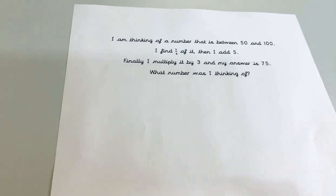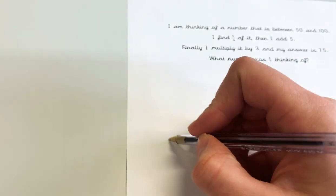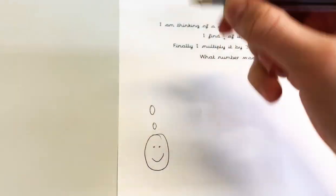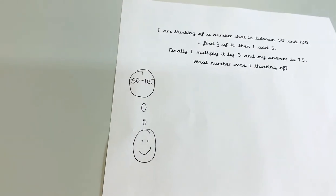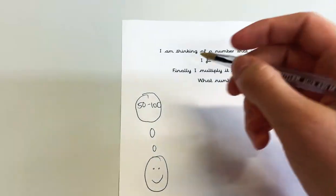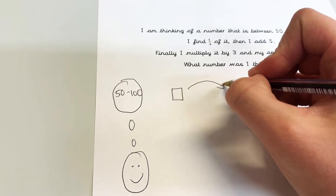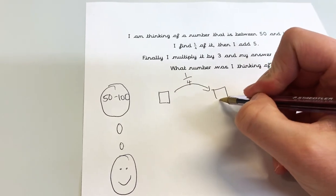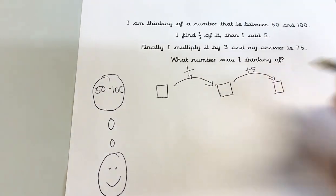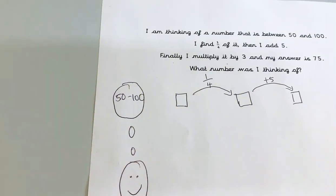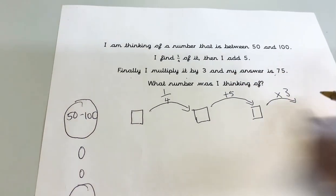Let's try one more. I'm thinking of a number that's between 50 and 100. I'm not sure exactly what number it could be, but it's between 50 and 100. I find one quarter of it. Then I add 5. Then finally I multiply by 3, and my answer is 75.